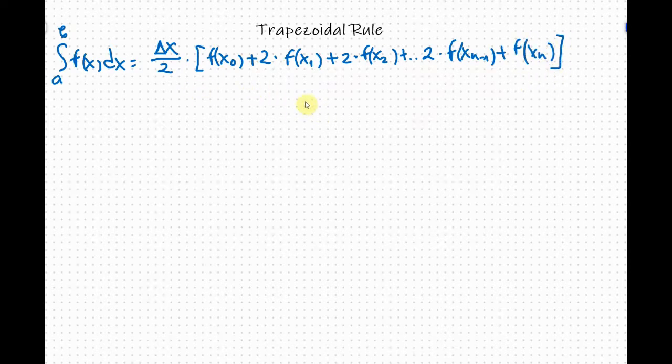That is trapezoidal rule. Keep in mind that you do not multiply the first and the last term by 2. We just multiply what's in the middle.